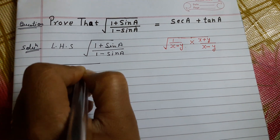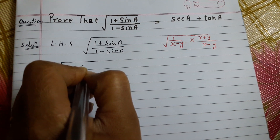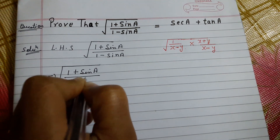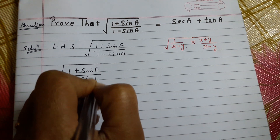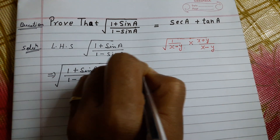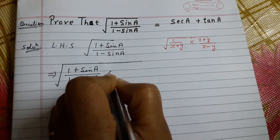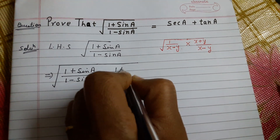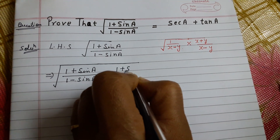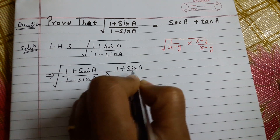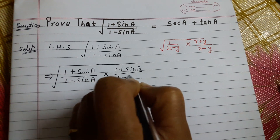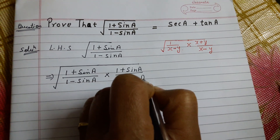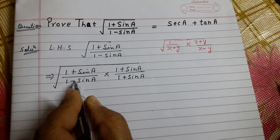We have (1 + sinA) / (1 - sinA). The denominator factor is (1 - sinA), so we will multiply both the numerator and denominator by (1 + sinA).